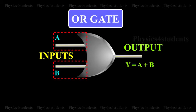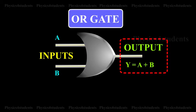The logic symbol of a two input OR gate is shown in the animation. The boolean expression to represent OR gate is given by y is equal to a OR b.